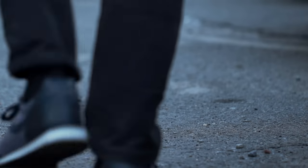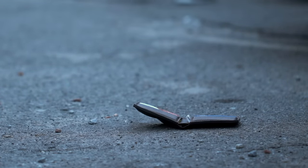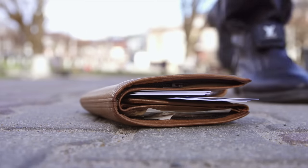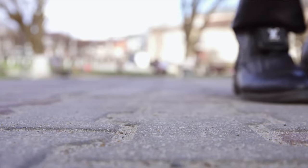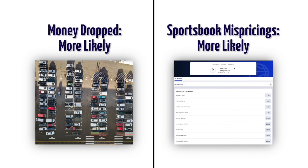We can think of this as someone accidentally dropping money on the ground — in this case the sportsbook — and you're out there trying to look for it and pick it up. There are places where it's more likely they would have dropped that money, and similarly there are markets where it's more likely sportsbook mispricings and arbitrage opportunities would occur. These are rare and they also disappear quickly once someone has found it and taken advantage of it.